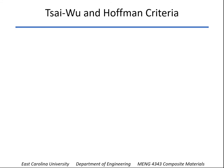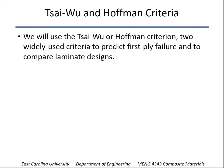With all that disclaimer in mind, a couple of the criteria that are used pretty widely are the Tsai-Wu and the Hoffman criteria. These are used to predict first-ply failure — what's the weakest link of your laminate. And they work well for comparison purposes, but none of these always predict perfectly when a laminate is going to fail.